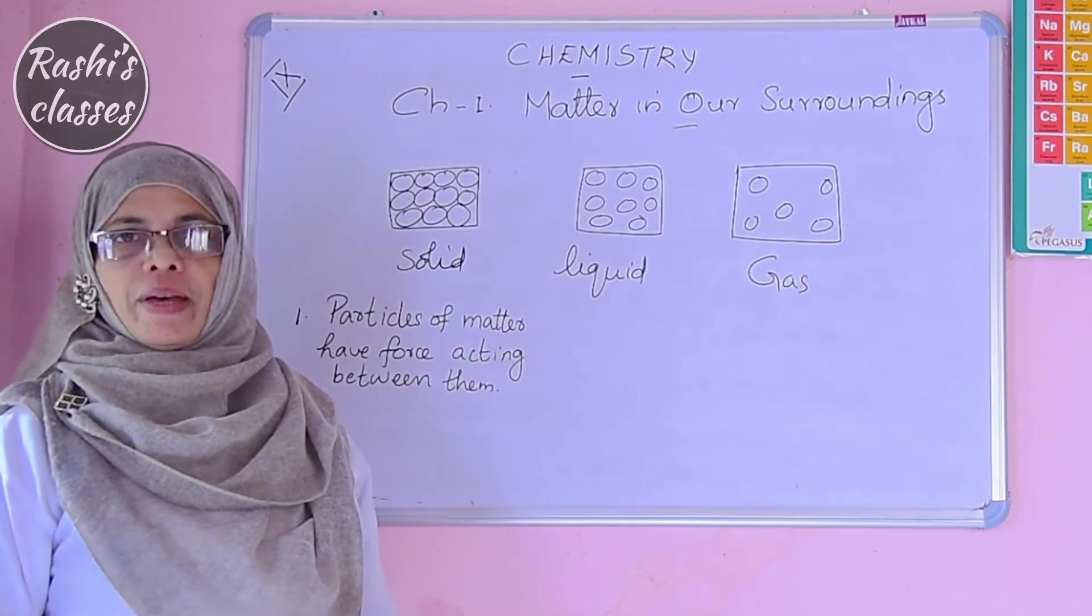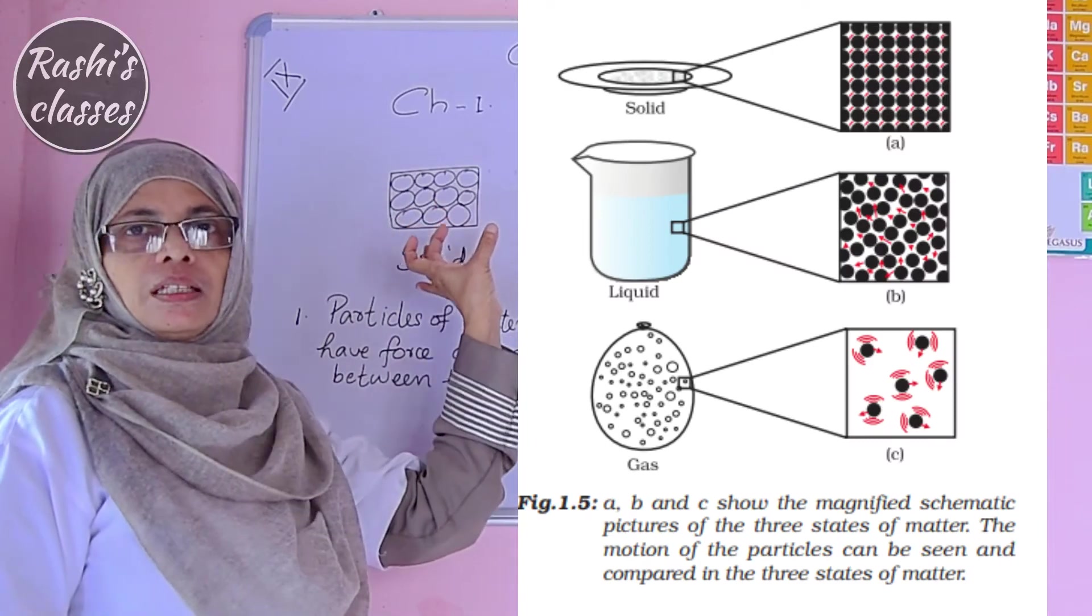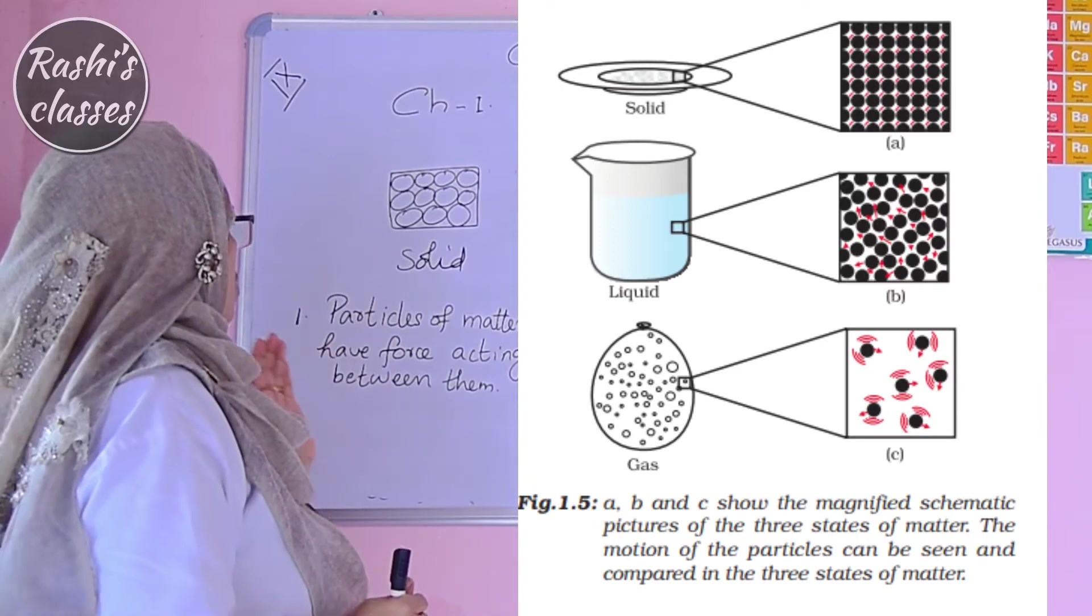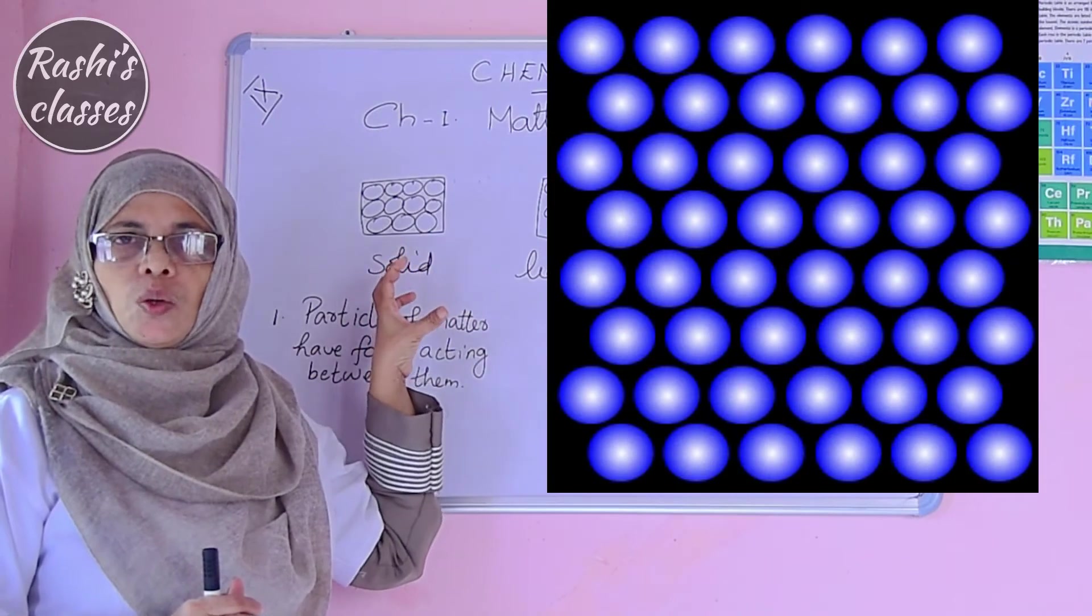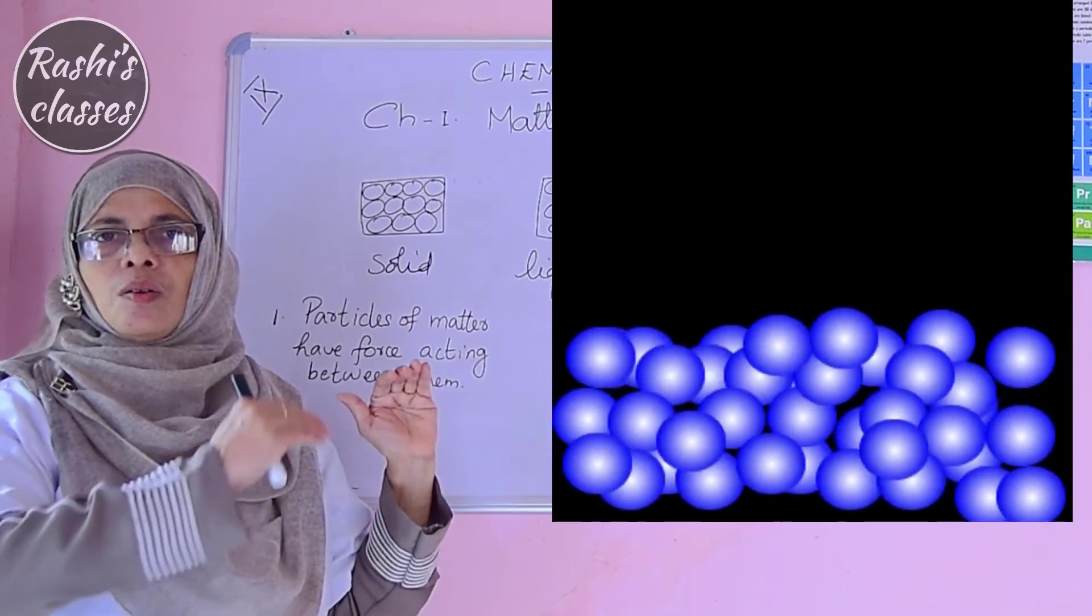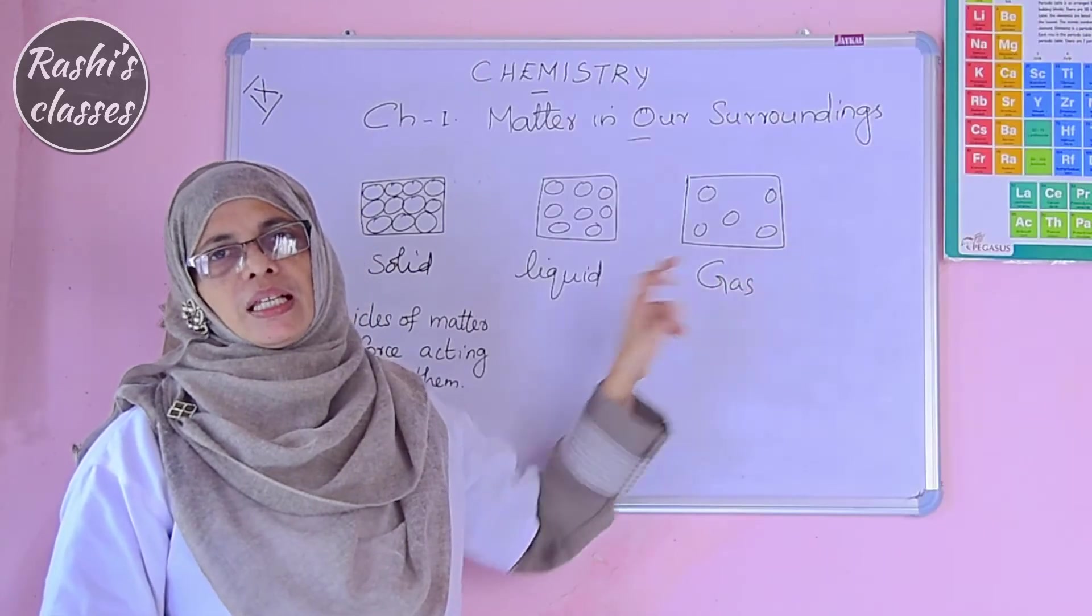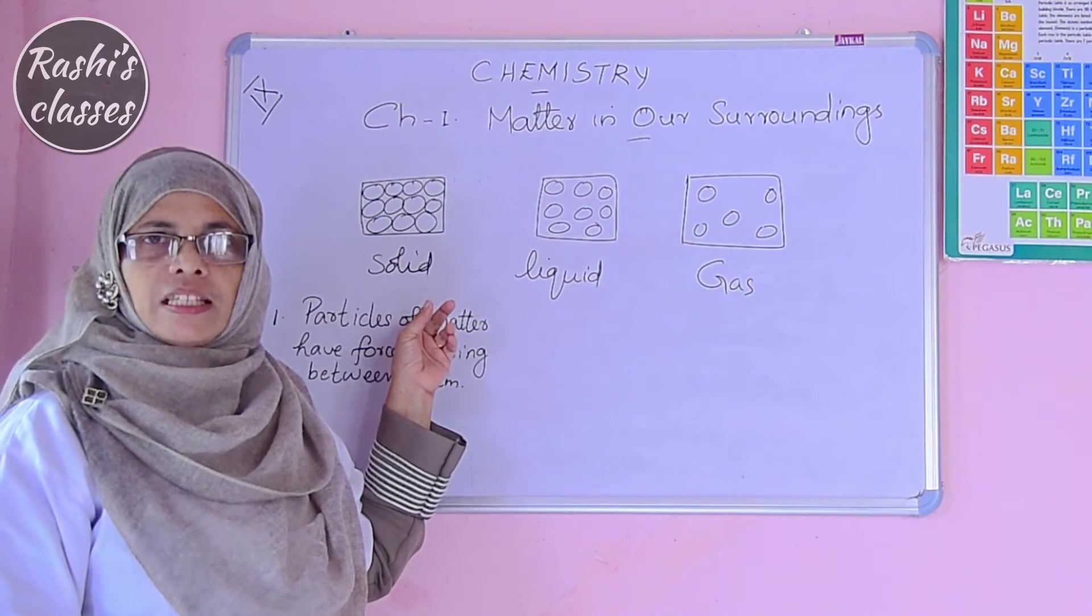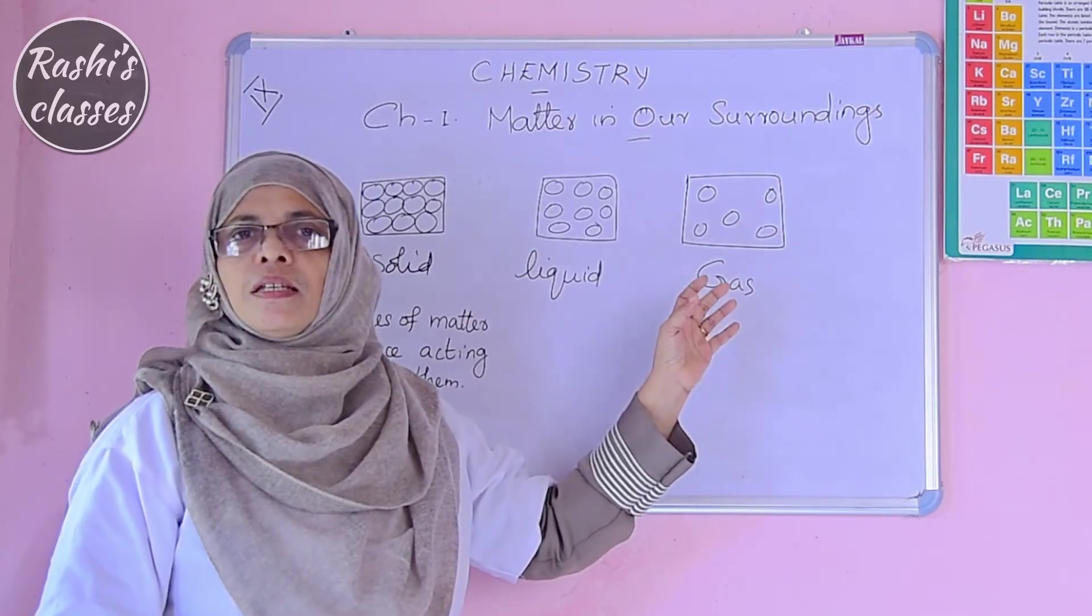These are the three different states of matter: solid, liquid, and gas. Here we can see the particles are so close; their attraction is strong. So we can say particles of matter have force acting between them. In the case of solids, a strong force of attraction is there. In liquids, particles have more space compared to solids. The attraction of particles in gas is weak. So here we can say the attraction is maximum in solids. In liquids it is not that much, and in the case of gas, attraction is minimum.